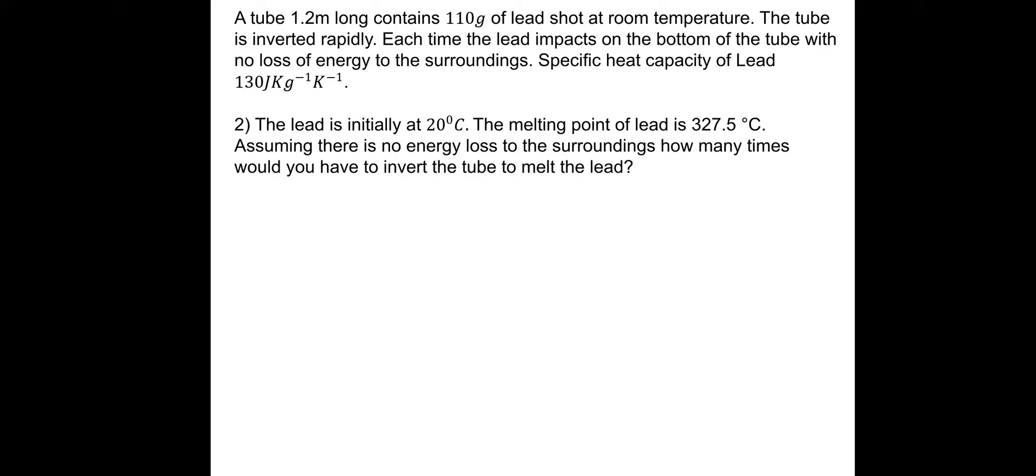Let's move on. Pause and have a go at this one. Again, a tube 1.2 meters long contains 110 grams of lead shot at room temperature. The tube is inverted rapidly. Each time, the lead impacts on the bottom of the tube with no loss of energy to the surroundings. Specific heat capacity of lead is 130 joules per kilogram per Kelvin. This time, the lead is initially at 20 degrees Celsius. The melting point of lead is 327.5 degrees Celsius. Assuming there is no energy loss to the surroundings, how many times would you have to invert the tube to melt the lead?